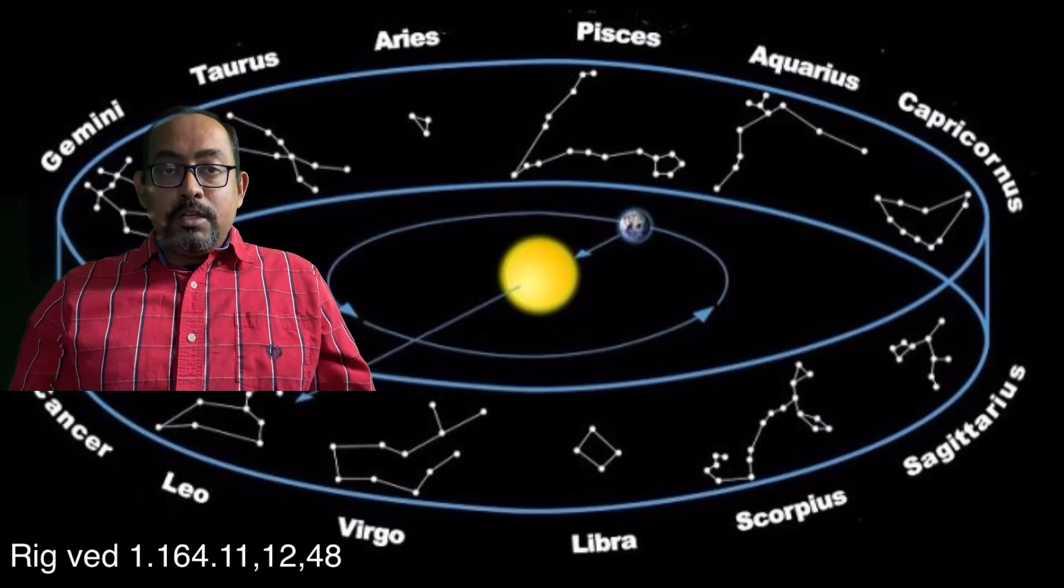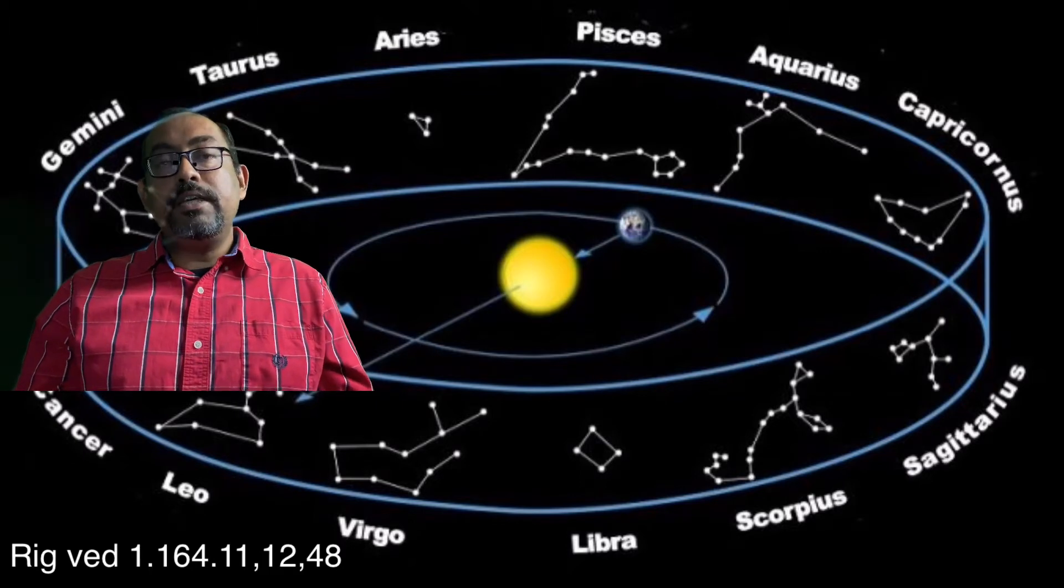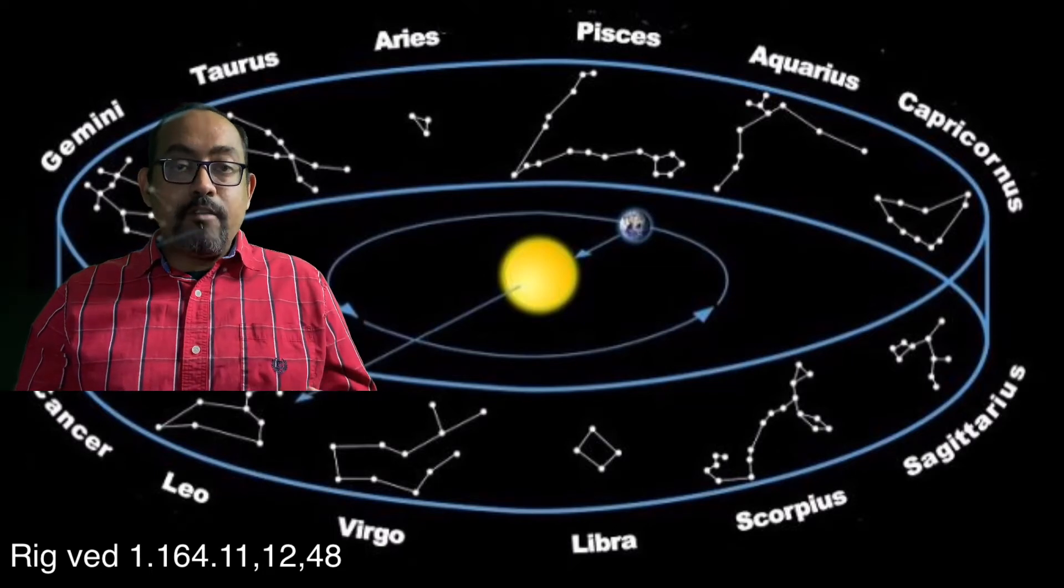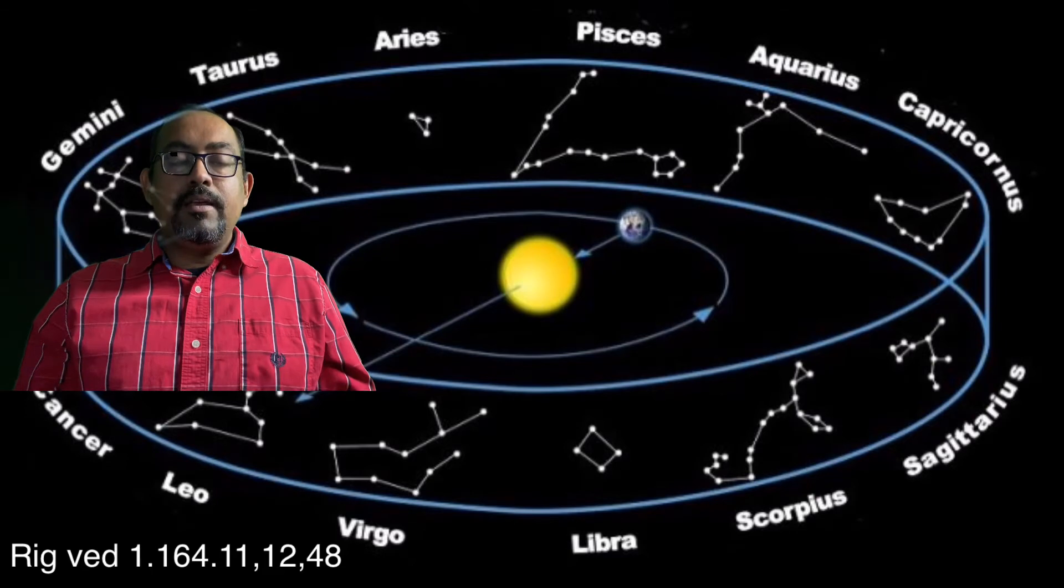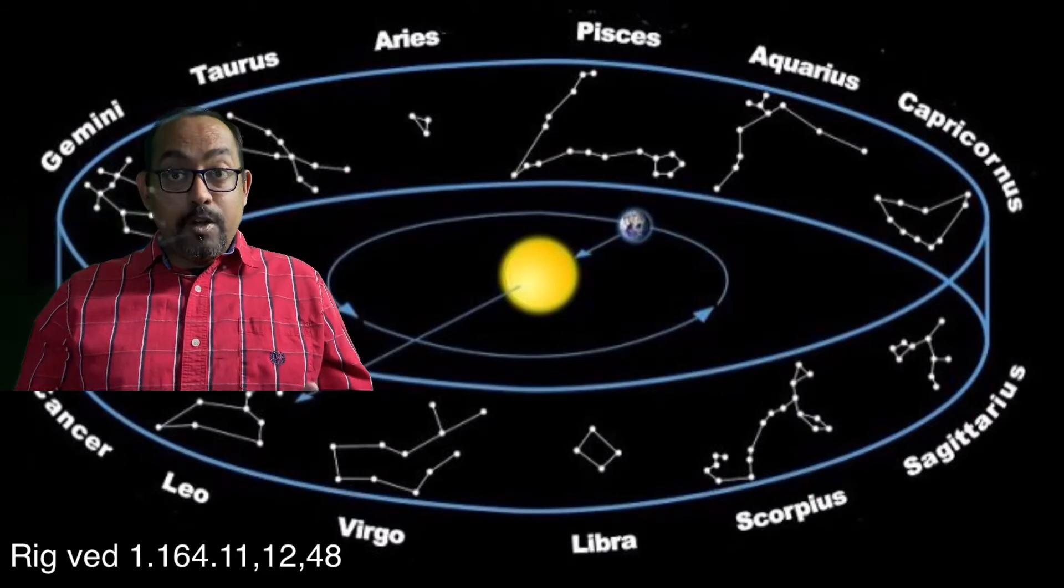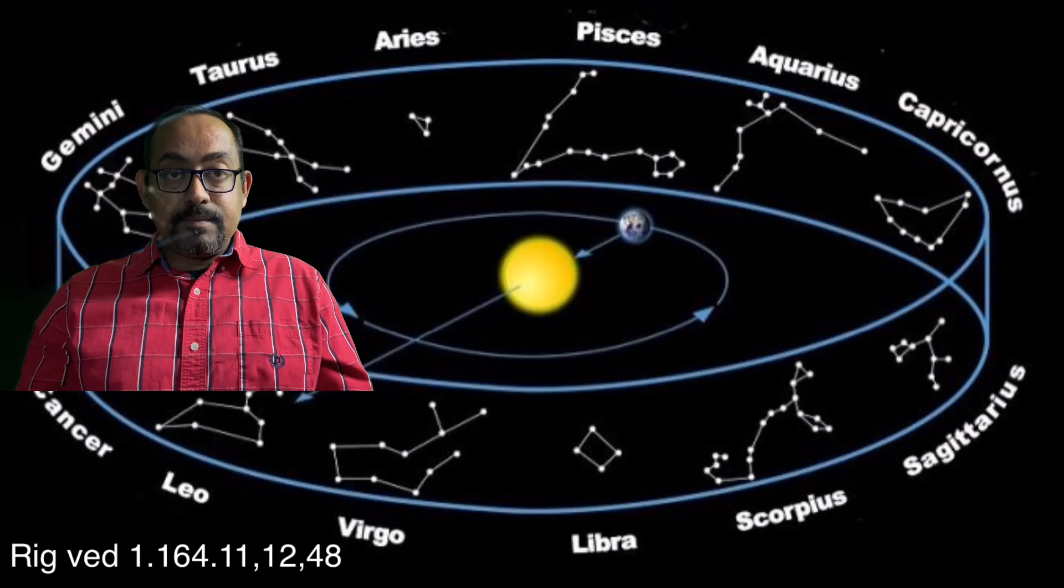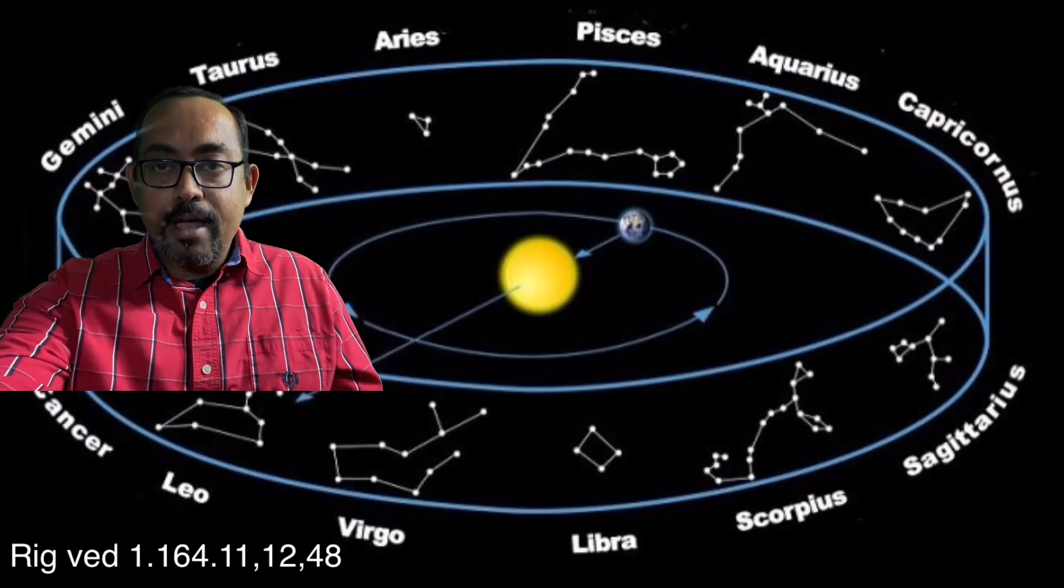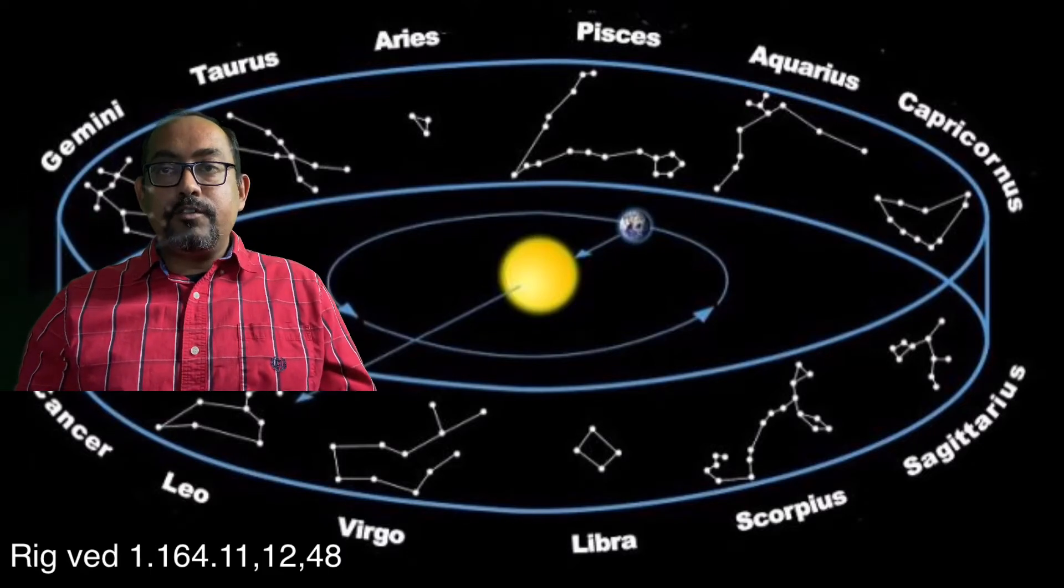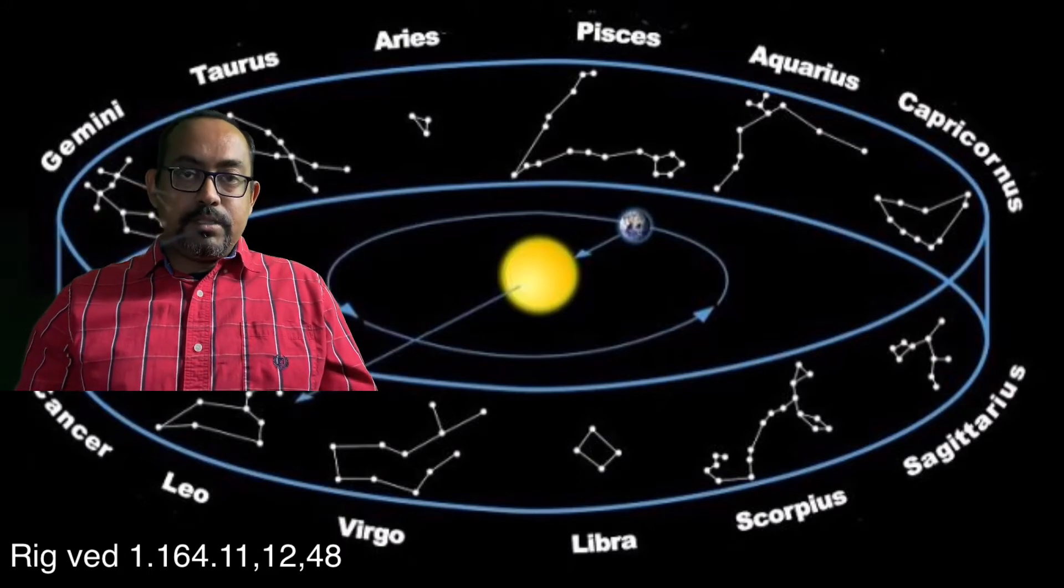Remember here, 1.164.11, what we have seen - there are 12 kind of something mentioned as twelve which are spokes of a wheel, then you have 720 suns in this mantra. Similarly 1.164.12, very important, there it is mentioned about six seasons on the planet earth. Then you have another mantra 1.164.48. We will take these mantras together and finally come to the meaning and find what is hidden.